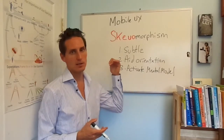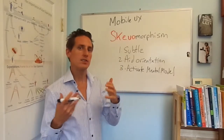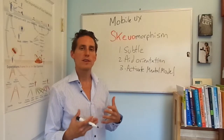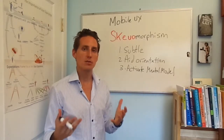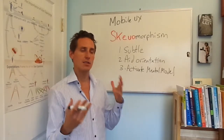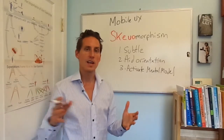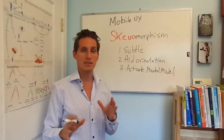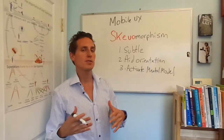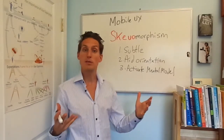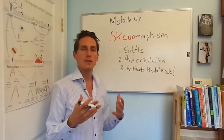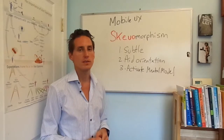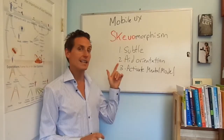First of all, it should be subtle. If skeuomorphism is the most obvious thing you see — if you look at a design and you go, 'oh my god, that's such and such,' and all you're thinking about is the real-world object — to me that violates subtlety. Skeuomorphism should just kind of sneak in, and maybe you notice it, maybe you don't — maybe you unconsciously notice it. That, to me, is a good use of skeuomorphism.